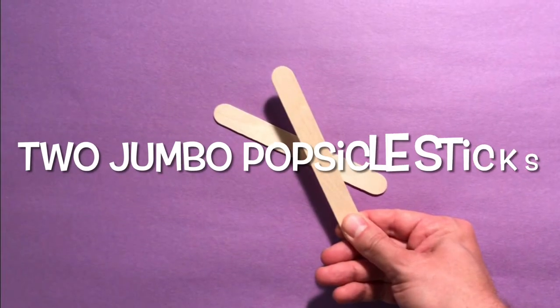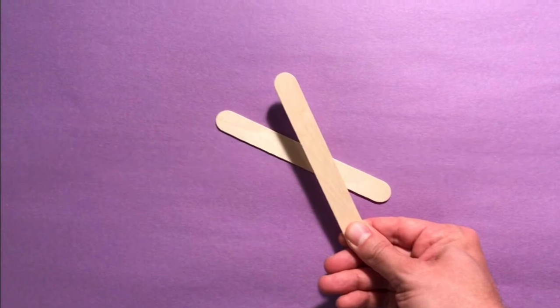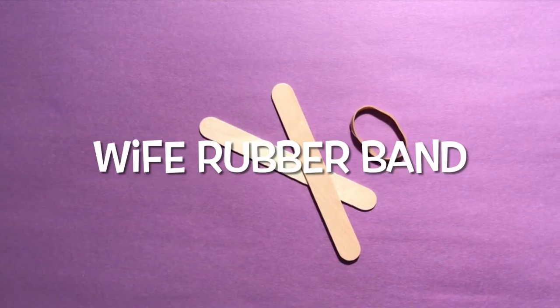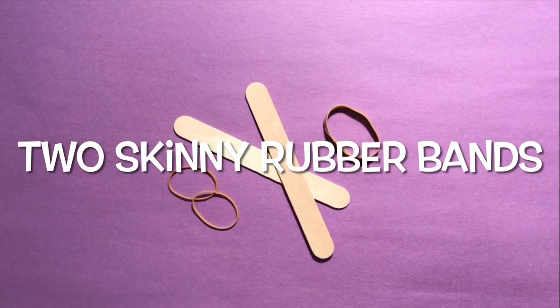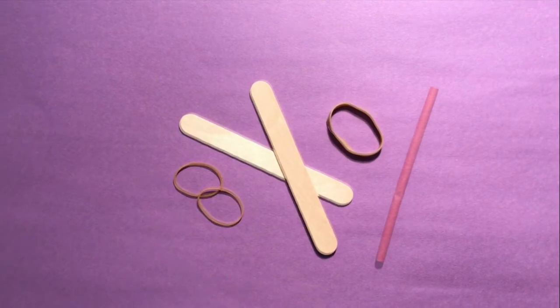You'll need two jumbo popsicle sticks. These aren't the small ones, but more like the tongue depressor kind. You're going to need a wide rubber band, not a skinny one, and then two skinny rubber bands. But if you only have large ones, that's okay too. We'll make it work.